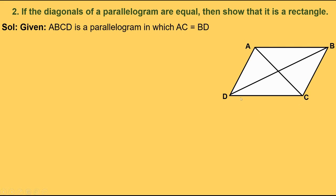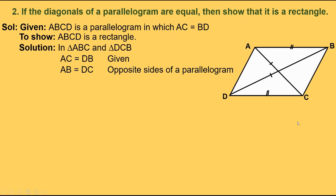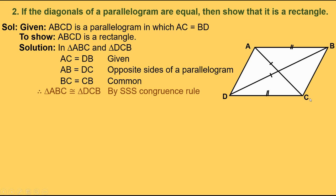We need to show that ABCD is a rectangle. We know that a parallelogram in which one of the angles is 90 degrees is a rectangle. So we need to show that one of the angles is 90 degrees. In triangle ABD and triangle BCA, AC equals BD (given, diagonals are equal), AB equals AB (opposite sides of a parallelogram are equal), and BC equals CB (common). Therefore, triangle ABD is congruent to triangle BCA by SSS congruence rule. This implies angle ABC equals angle DCB by CPCT.